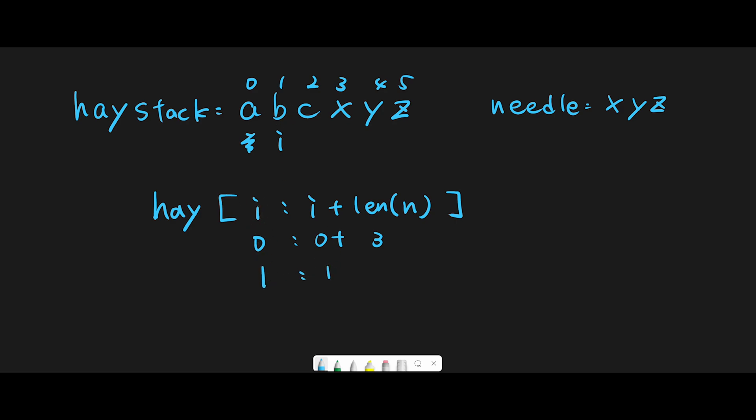We repeat the same process. Now index number is 1 and 1 plus 3 is 4, so from 1 to 4, which means 1 to 3. That's 'bcx' but the needle is 'xyz', so we can't start from index 1.